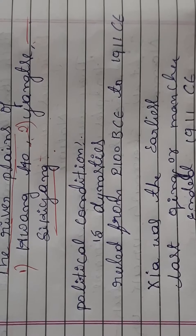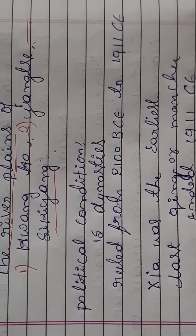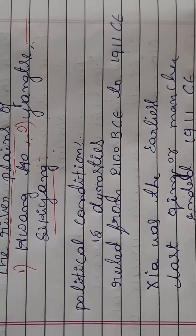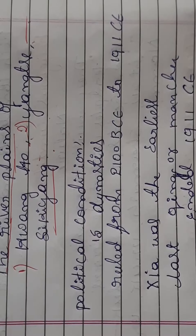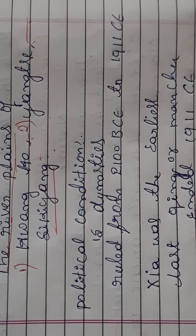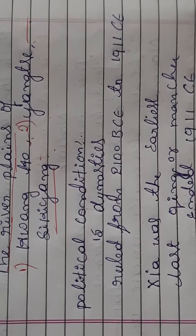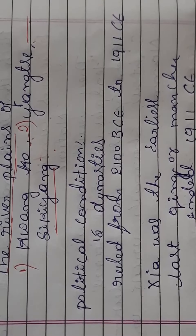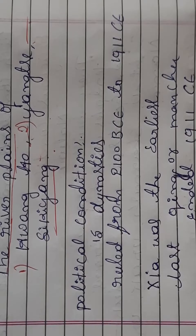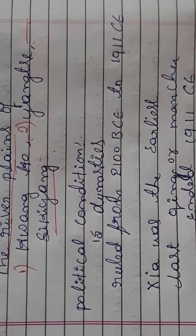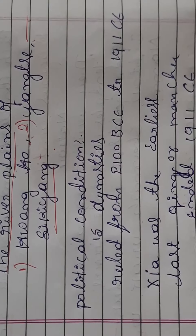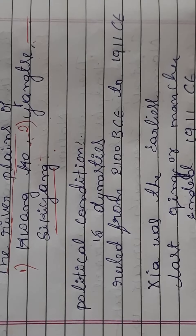What are the main physical features of this civilization? This civilization lies between the Himalayas in the west, the Pacific Ocean in the east, and desert in the north.